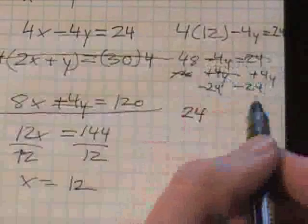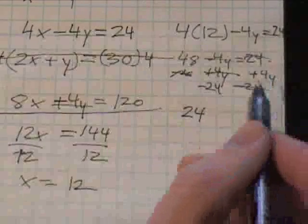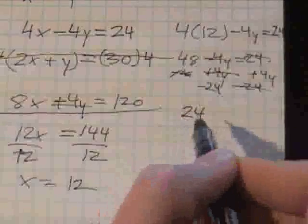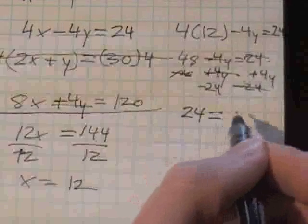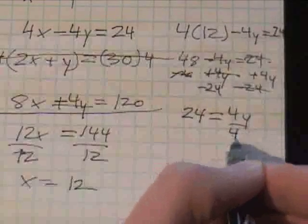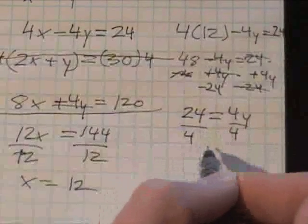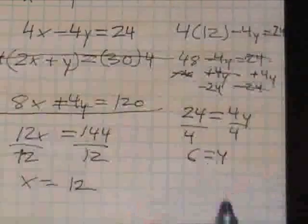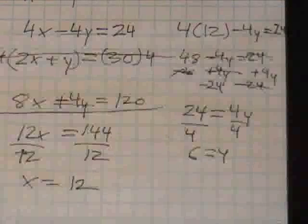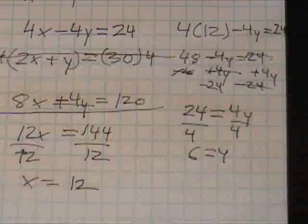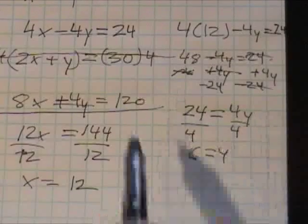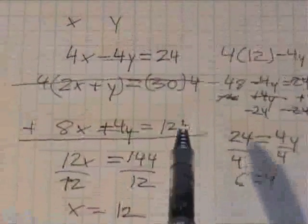So these ones of course cancel out, so you're left with 4y over here, and then 48 minus 24, which is just 24 over here. So 24 equals 4y. 4y should equal 6. So x equals 12 and y equals 6. Last thing we need to do is check our answer. So let's just plug both of these into the bottom equation.